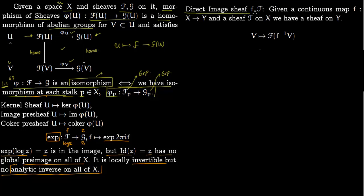Now we talk about the direct image sheaf. Say you're given a continuous map f: X → Y and a sheaf F on X. The sheaf F on X means you feed in an open set U and it spits out an abelian group. Now we want to build a sheaf on Y: you take an open set V in Y, feed it into some sheaf, and it spits out a group. That is given by F(f⁻¹(V)) — so f⁻¹(V) is some set U, and you feed V in and get a group.